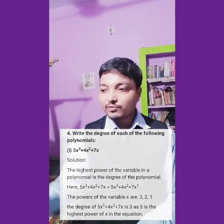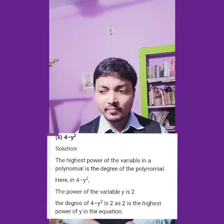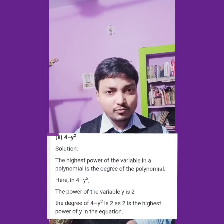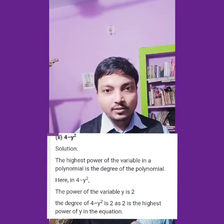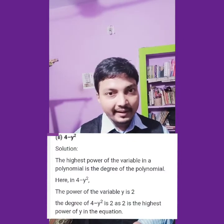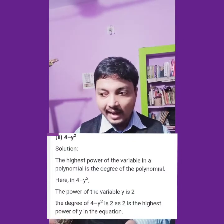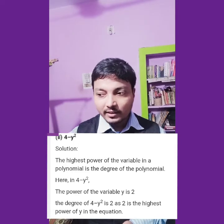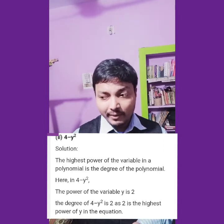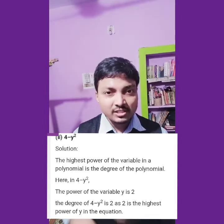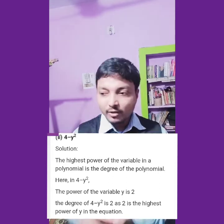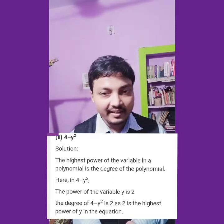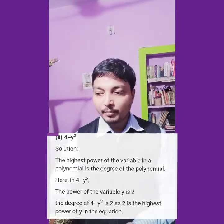Next one is 4 minus y square — two terms. The constant term 4 has power 0, and minus y square has power 2. Since 2 is greater than 0, the degree of 4 minus y square is 2.